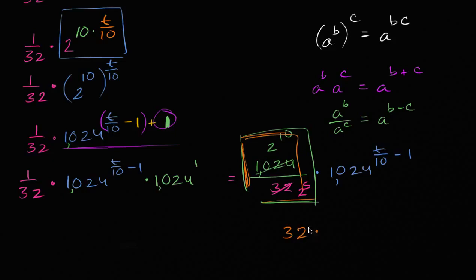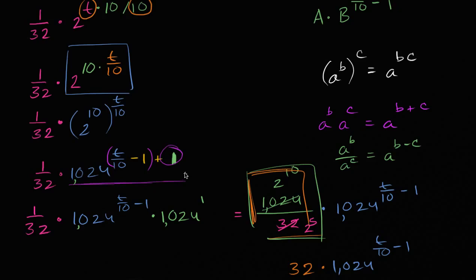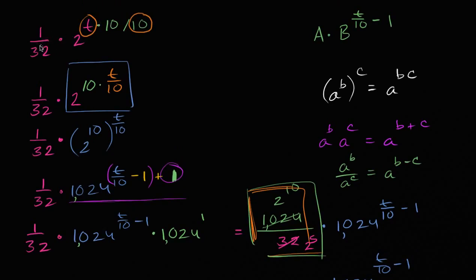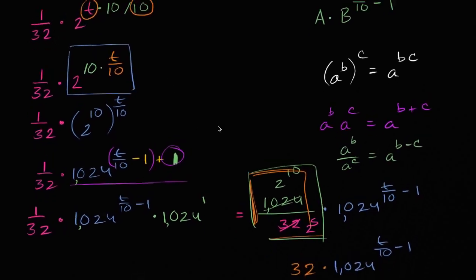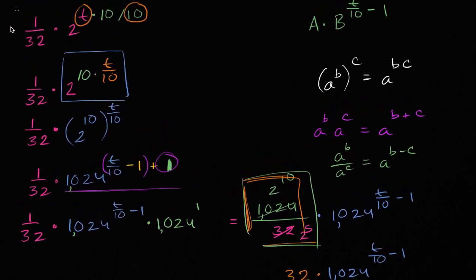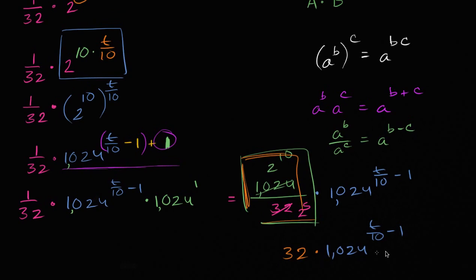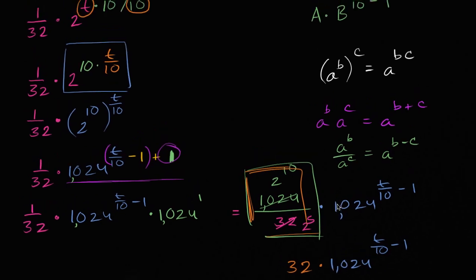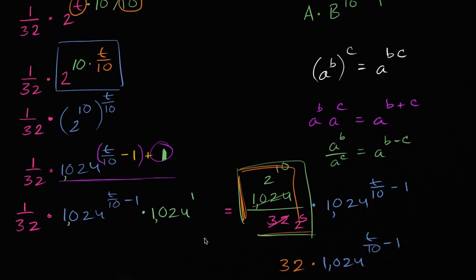So this gives us 32 times 1024 to the t over 10 minus 1. Normally in our lives we like to make things simpler, and I'm a big advocate of that — it's a good life philosophy. But this is a case where we really did make it more complicated. We started with 1/32 times 2 to the t and turned it into this thing with a hairier exponent. But it's a useful skill to have, because you might get one result and someone else might get the other, and it's very important to realize you actually got the same result — just different ways of expressing the same exponential expression.